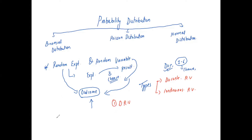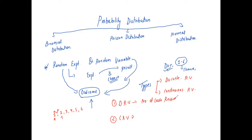For a discrete random variable, for example, consider the number of calls received. When we receive calls, the answer will be an integer — 1, 2, 3, 4, 5, 6. So the value of a discrete random variable takes integer values that we can count.